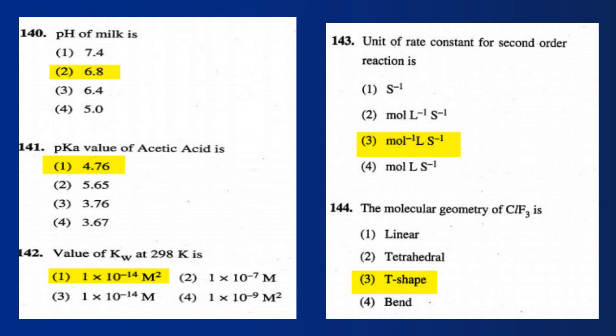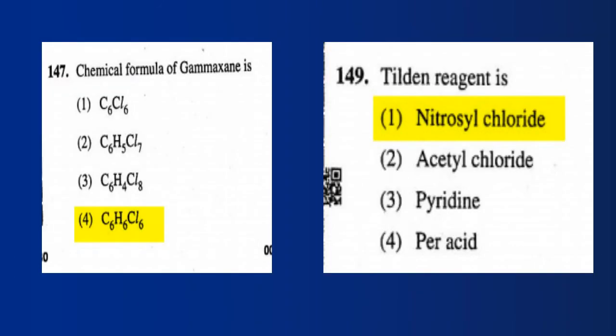Question 144: The molecular geometry of CF3 is T-shape. Question 147: The chemical formula of Gammexane is C6H6Cl6. Question 149: Tilden's reagent is nitrosyl chloride.